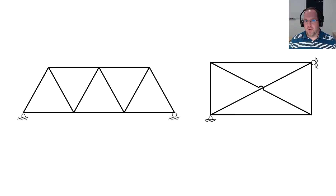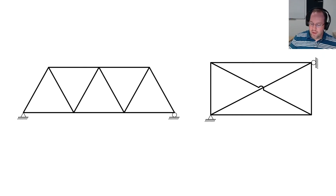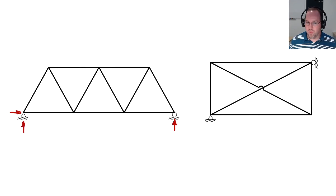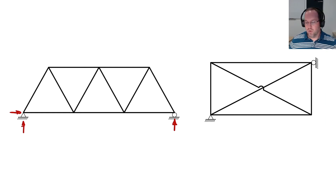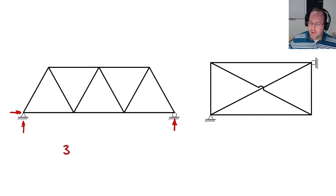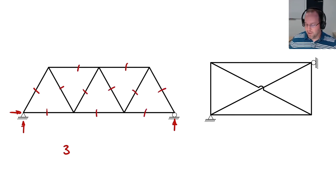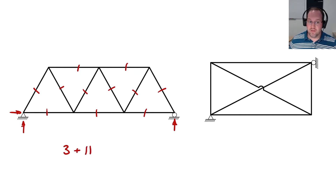Let's compute the degree of indeterminacy for a few example trusses. For the first example, we list all unknowns. We have three reaction forces — two at the pin and one at the roller. The external forcing doesn't matter; indeterminacy is a property of the system itself. We also have 11 internal elements, each with one axial force unknown. So total unknowns is 14.